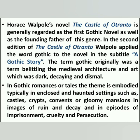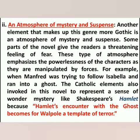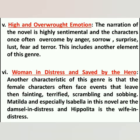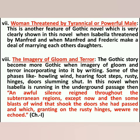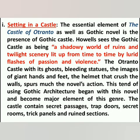In gothic romances or tales, this medieval atmosphere is embodied typically in enclosed and haunted settings such as castles, crypts, convents, or gloomy mansions — in images of ruin and decay, and in episodes of imprisonment, cruelty, and persecution. In The Castle of Otranto, Walpole displayed elements such as the presence of a castle, atmosphere of mystery and suspense, unseen prophecy or curse, supernatural events, high and overwrought emotion, women in distress saved by a hero, women threatened by a tyrannical powerful male, and the imagery of gloom and terror.